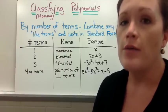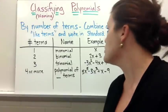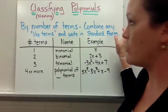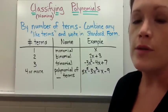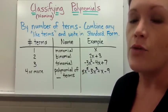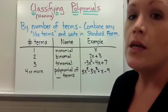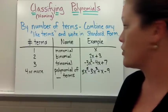So first let's look at how many terms we have. First you want to combine any like terms in a polynomial that you're given and write it in standard form. Typically that would be just in descending order from your highest exponent down to the lowest exponent or your constant term.